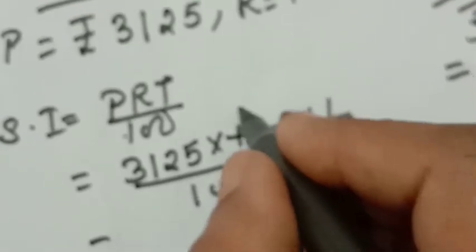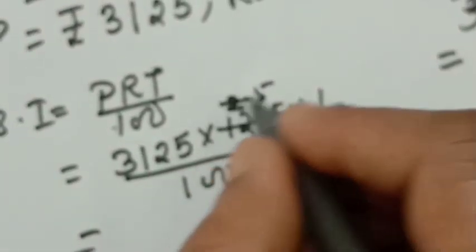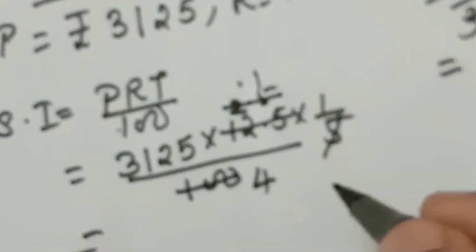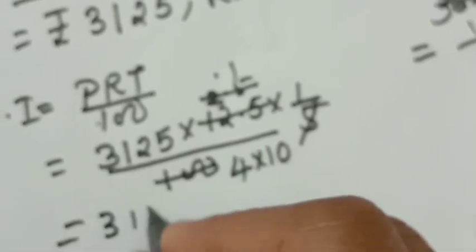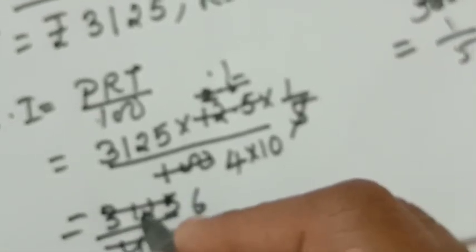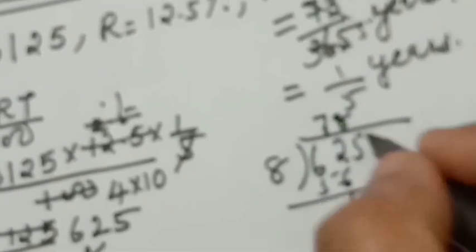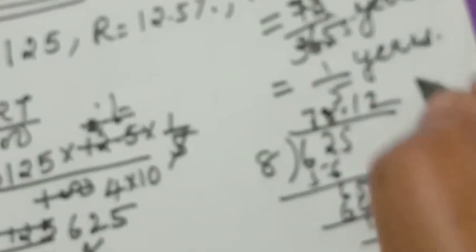Using the 5 times table, you can cancel out. 3125 divided by 40 — again cancel using the 5 table. You get 625 divided by 8. Dividing, you will get 78.125. Simple Interest equals Rs.78.125.